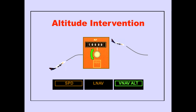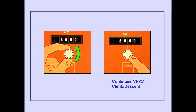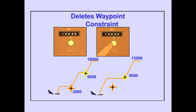To accomplish altitude intervention during a climb or descent, an intervention altitude can be set in the altitude window. The airplane automatically levels off at the selected altitude. VNAV altitude is displayed on the PFD, indicating that autopilot pitch is maintaining the selected altitude. Selecting a new altitude and pushing the altitude select knob initiates continuation of the VNAV climb or descent profile. Each push of the altitude selector deletes the next waypoint constraint.